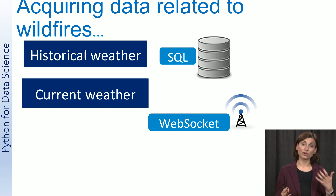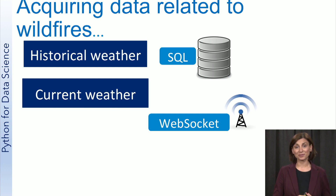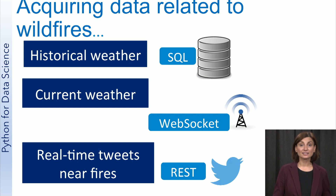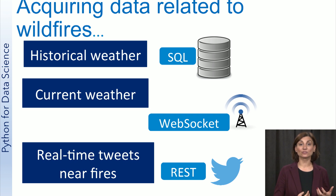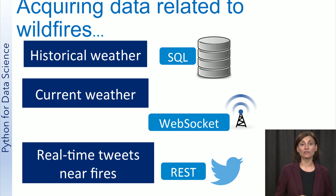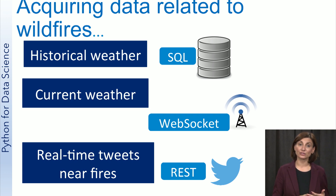This data is then processed and compared to patterns found by our models to determine if a weather station is experiencing Santa Ana conditions or fire weather conditions. At the same time, tweets are retrieved using hashtags related to any fires occurring in the region. The tweet messages are retrieved using the Twitter REST service. The idea is to determine the sentiment of these tweets — to see if people are expressing fear, anger, or simply being nonchalant about the nearby fire. The combination of sensor data and tweet sentiments helps give us a sense of the urgency of the fire situation.